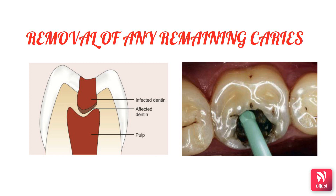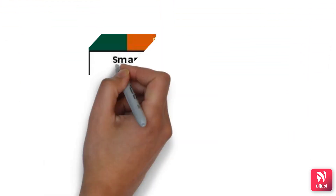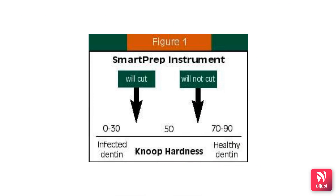Recently, to remove this infected dentine, innovative rotary polymer instruments have been launched, known as SmartBurs. These have an innovative flute design, available in sizes 2, 4, and 6, and run under a slow-speed handpiece at a speed of 500 to 800 RPM. Their hardness is greater than the carious dentine but lesser than normal enamel or dentine, so they effectively remove the infected dentine without disturbing the affected dentine.